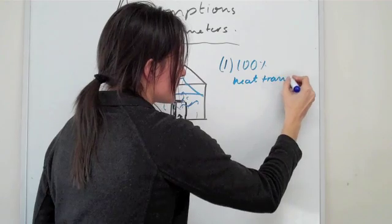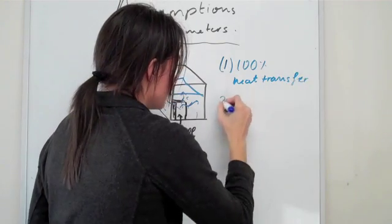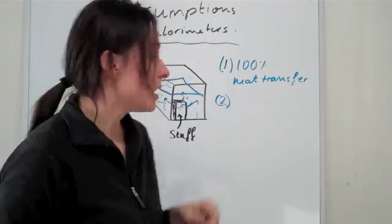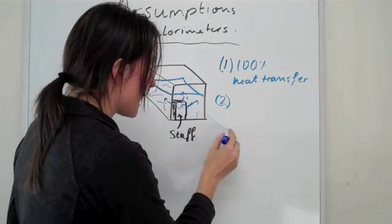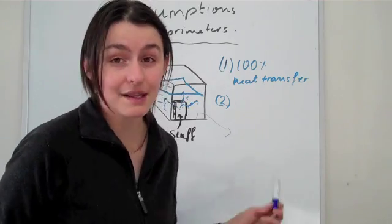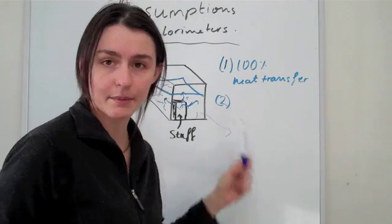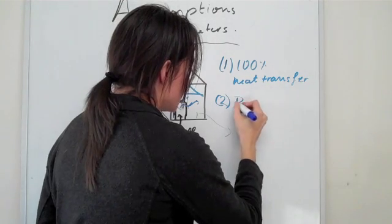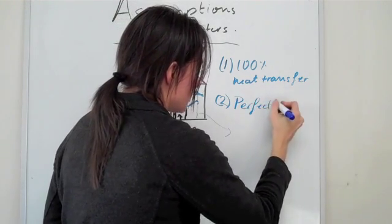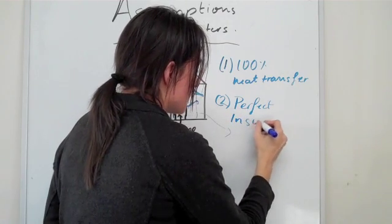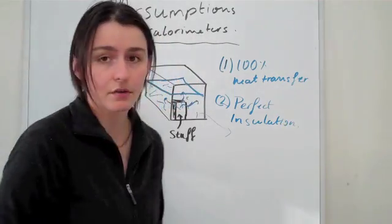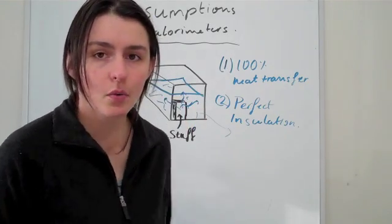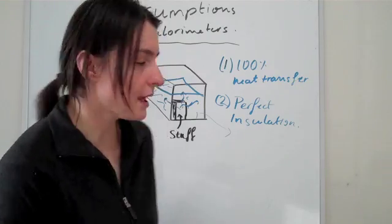The second assumption we are making is that the calorimeter itself is very well insulated. We cannot have this energy going out into the exterior. What we know is that generally that is not the case — you've either got heat going out or heat coming back in — so we assume the calorimeter is perfectly insulated. Just keep that in mind when dealing with these calorimeters: they are not perfect, but because we make these assumptions we can ignore those errors.